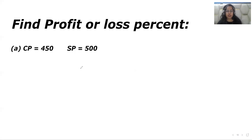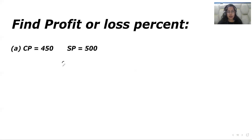This is our first question: find profit or loss percentage. First we need to see what occurred in this question. As you can see, the cost price is 450 and the selling price is 500. Here SP is greater than CP, which means we have a profit.